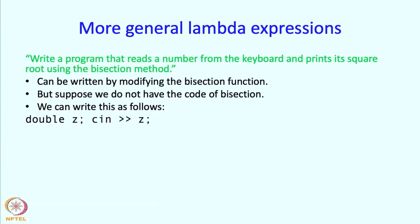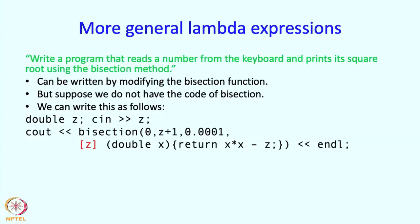So suppose we want the square root of z, so what are we going to do? We are going to first read z. So we are going to declare a variable to store z and we are going to read a value into it. And after this, we are going to have a call to bisection almost like what we had earlier, so double x, the function is the same, except that here now we want to calculate the value, the root of x squared minus z and not x squared minus 2. So this root is being calculated, the root of x squared minus z is calculated and the z is taken or captured from outside of this body.